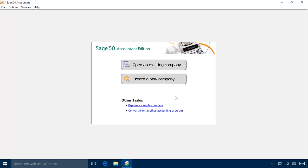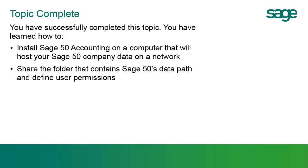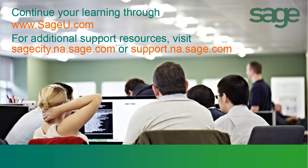With the server installation complete, the Sage 50 data path shared and available on the network, and the program activated with the latest updates installed, you can now install Sage 50 Accounting on each workstation that will be using the program. For more information, please view the Installing Sage 50 Accounting on a Workstation and Using the Network Installation Manager Anytime Learning topics. This concludes our look at installing Sage 50 Accounting on a server. You have successfully completed this Anytime Learning topic. Thank you for taking this topic — for information on additional training options available, visit us at sageu.com.